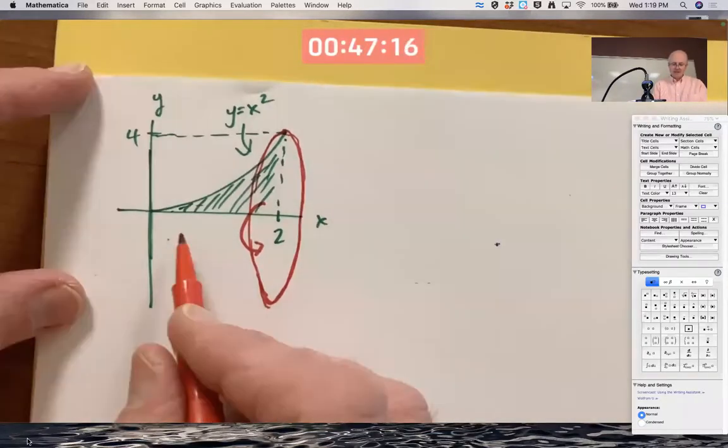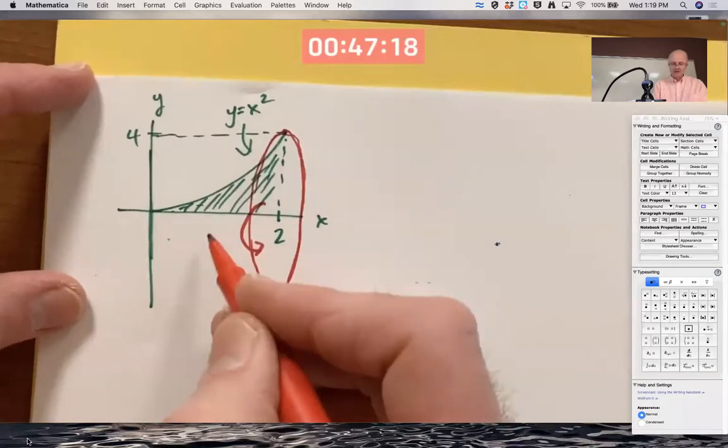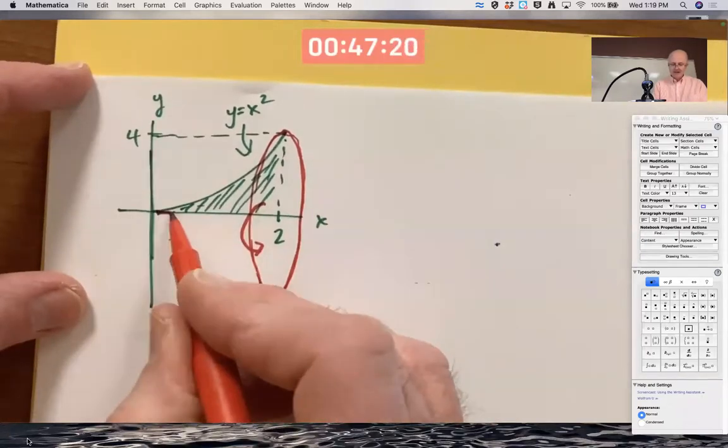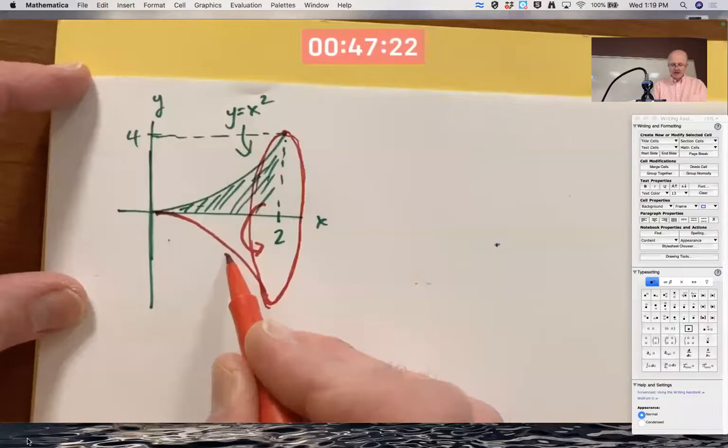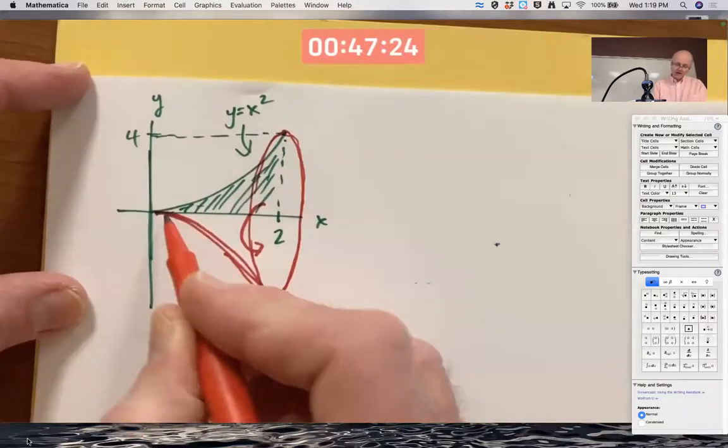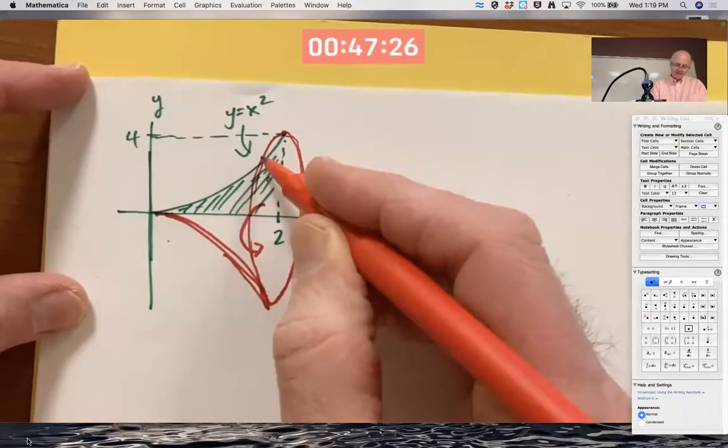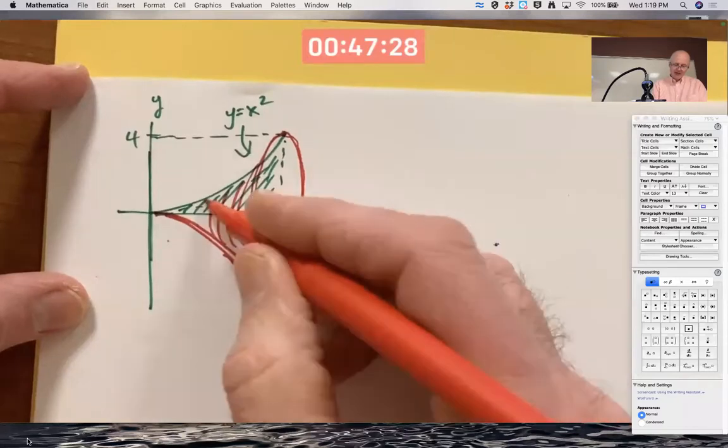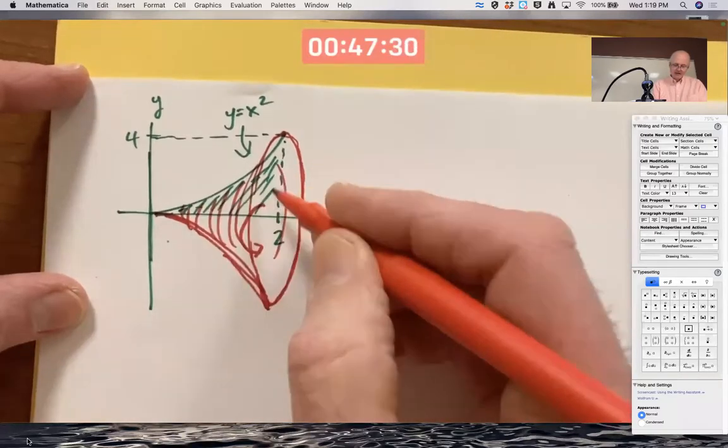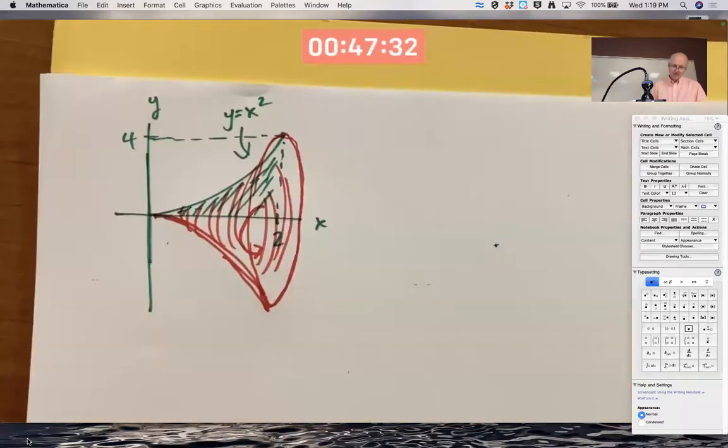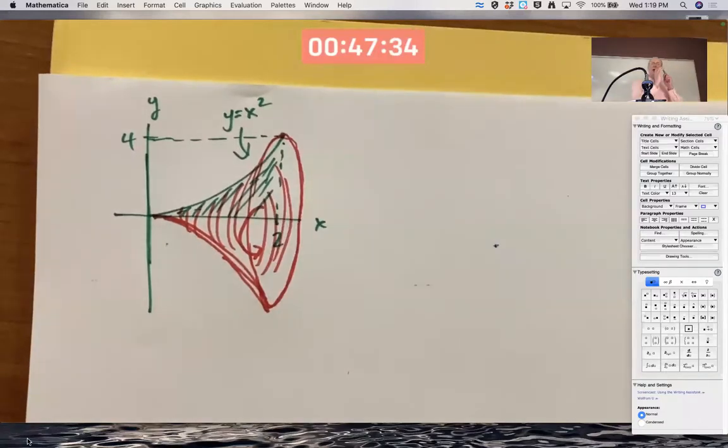And everything else is going to do something similar, except the circles are going to be smaller. And in the end, the solid you're going to get will look something about like this. It'll be like a horn. And you can try to add some shading in here to emphasize the nature of the solid, like you're blowing into a horn.